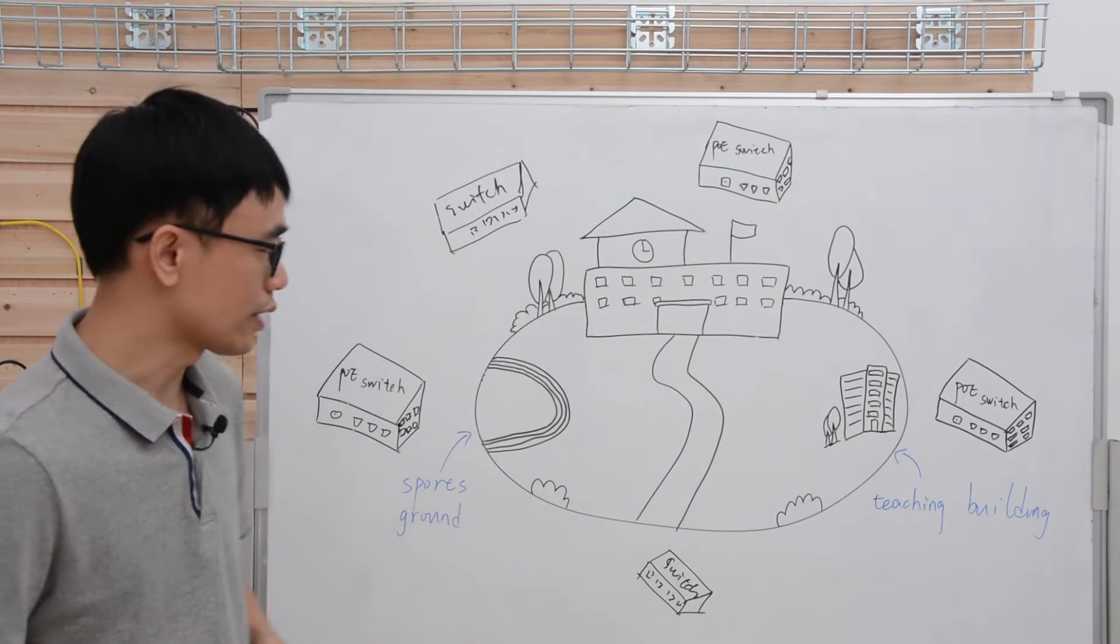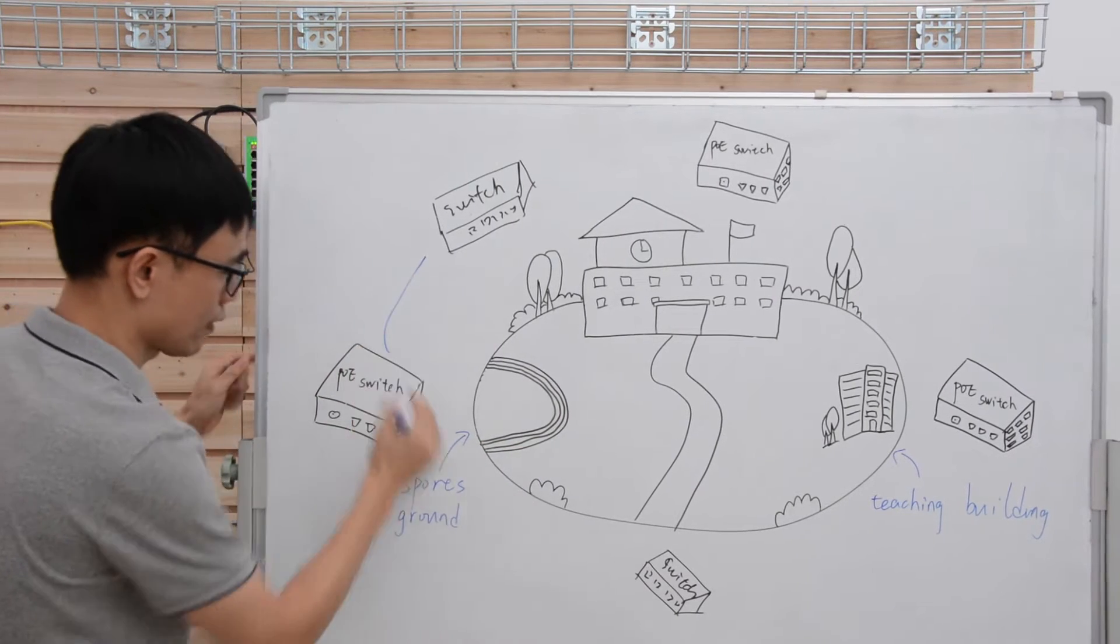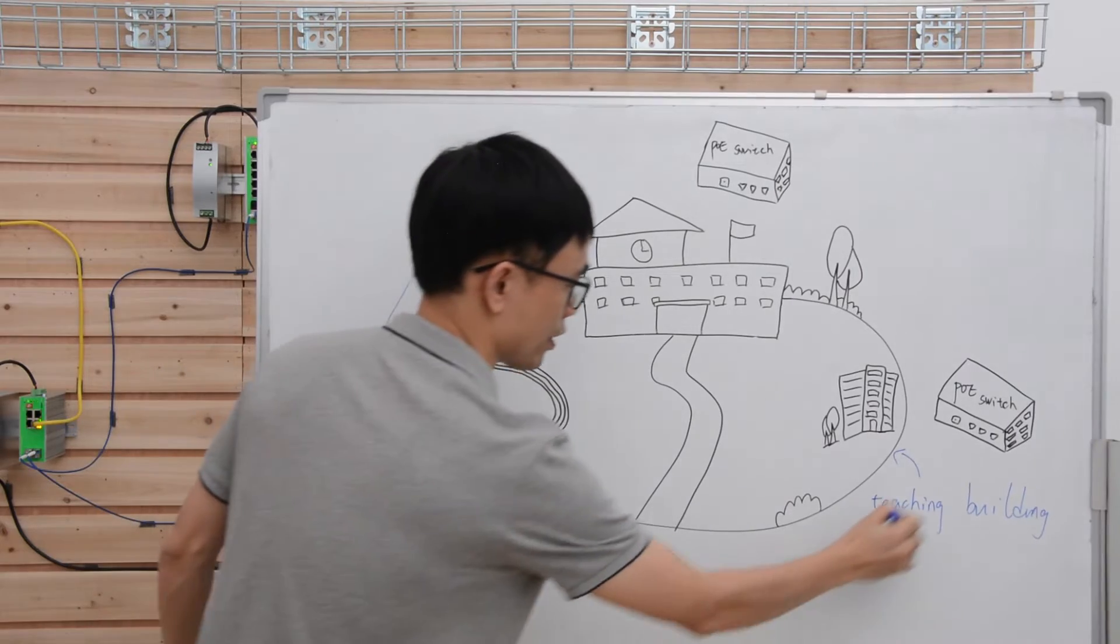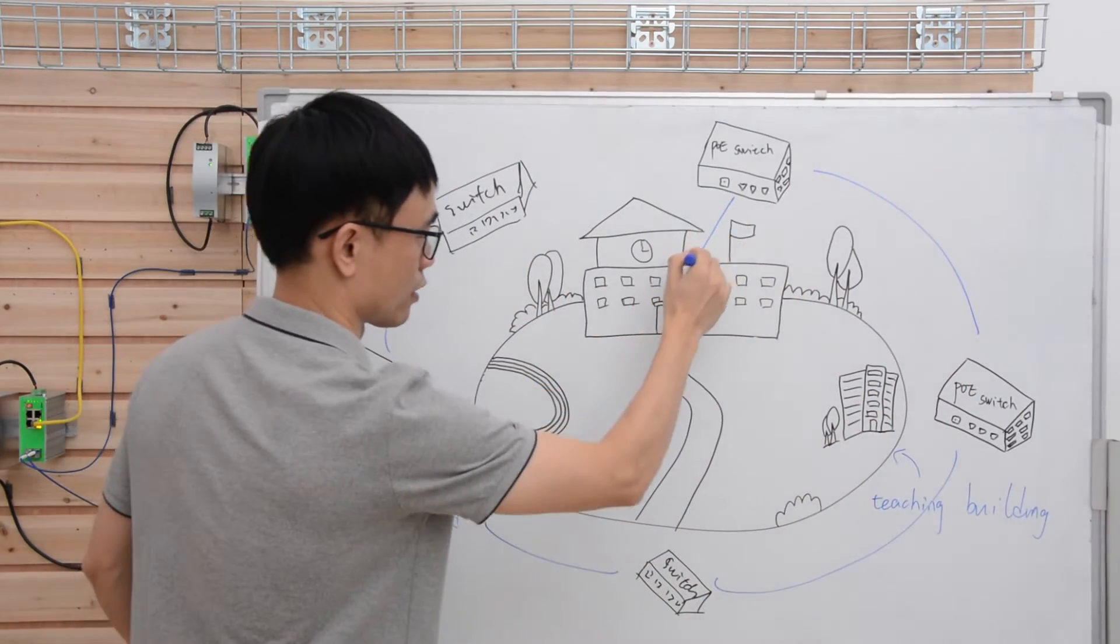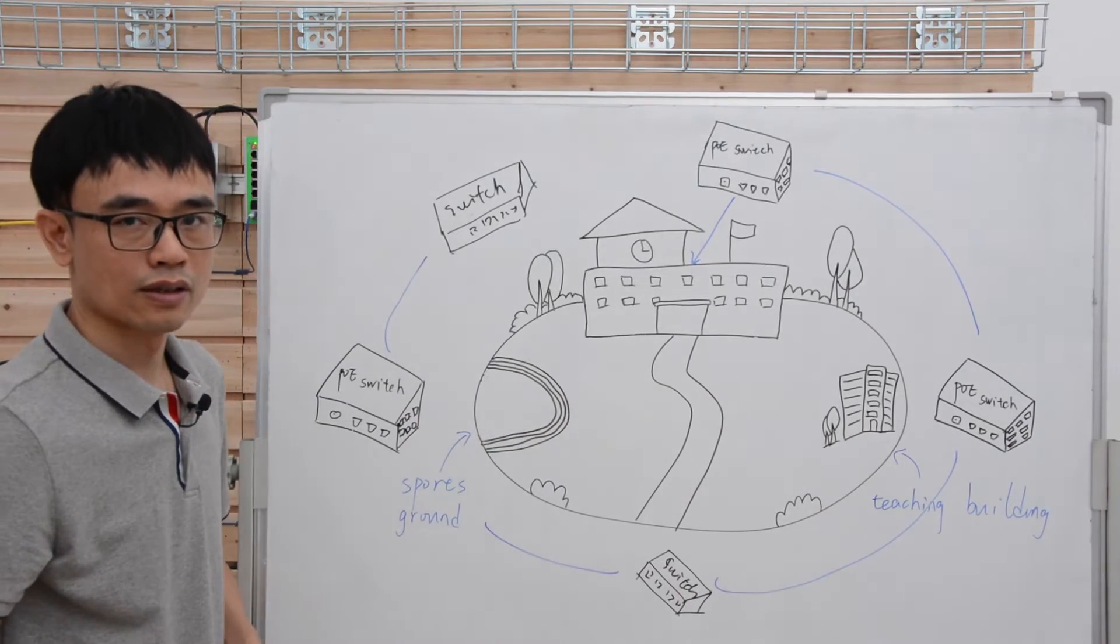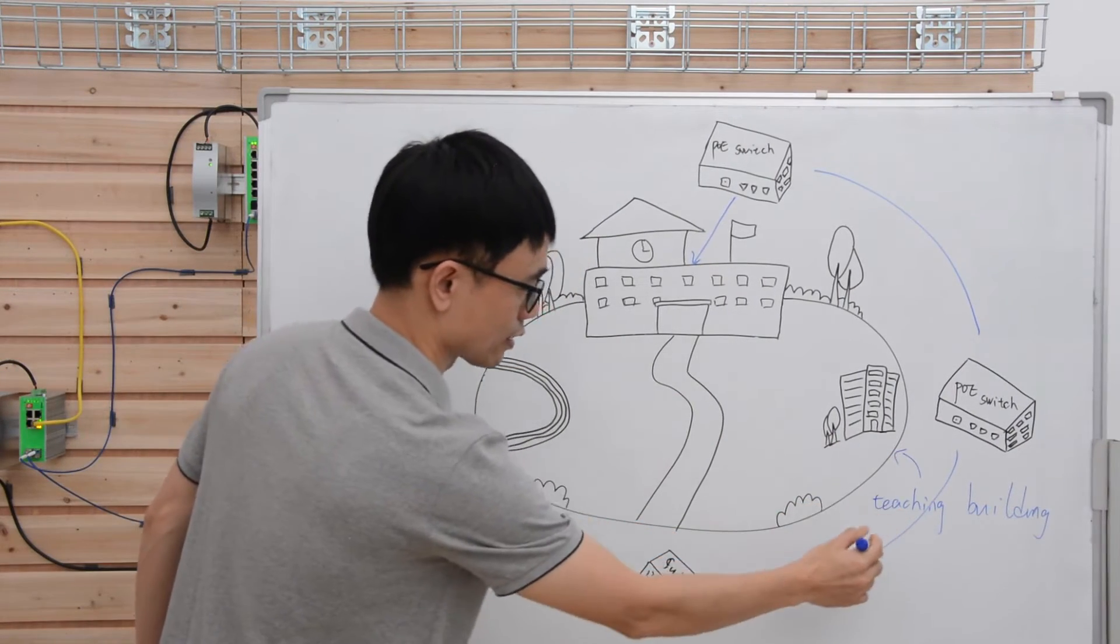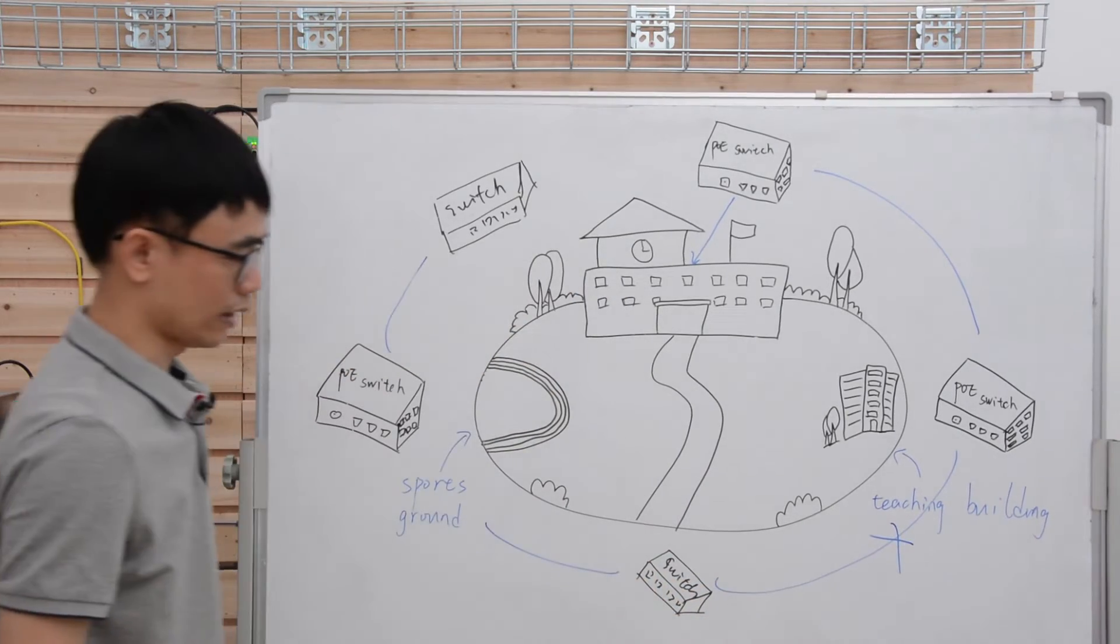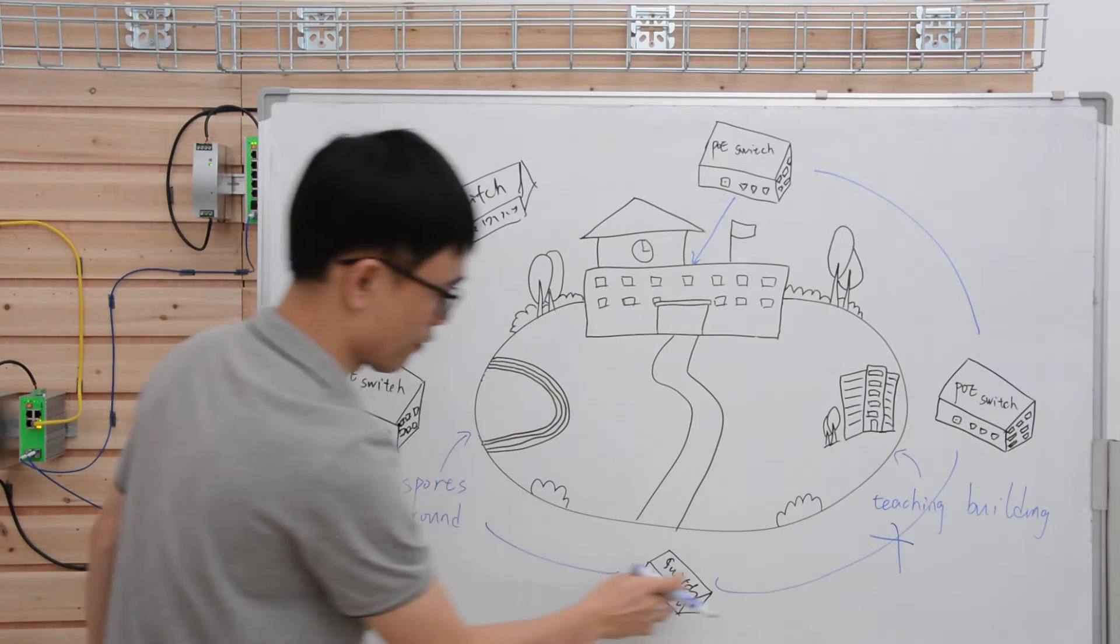So the first solution is we can daisy chain the switch. Just slide this one and we put everything together. And from the last one, we will connect back to the central switch. But you can see the problem. If the second one is defective or the link is defective, let's say this now is not working. So we are going to lose all the switches after the second one.